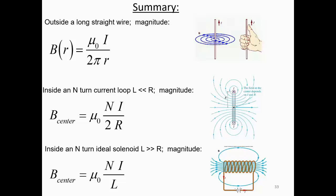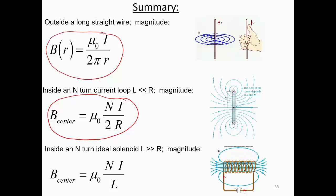Here's a quick summary of magnetic fields due to different current configurations. First, the magnetic field due to a long straight wire at distance r. Second, the magnetic field due to a loop current at the center, given by its formula. Third, the magnetic field due to a solenoid — a spring-like coil — at the center or inside, given by B = μ₀nI, where the magnetic field inside the coil is uniform and constant.